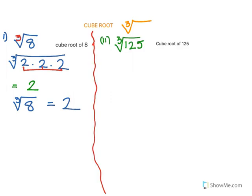The next is cube root of 125. Now 125 is 5 into 5 into 5. Because it is a cube root, we need to make groups of 3: 1, 2, 3 — so that is equal to 5. Cube root of 125 equals 5.